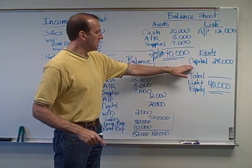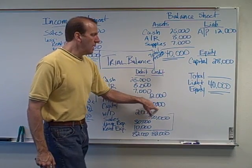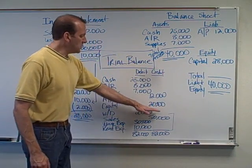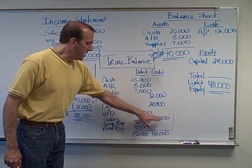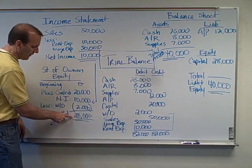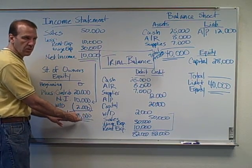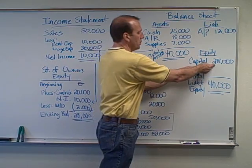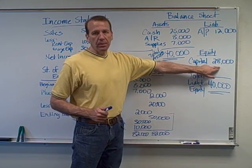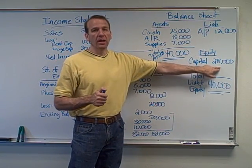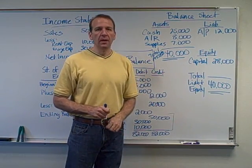Be very careful — the capital account on the trial balance shows $20,000, but that was just the owner contribution. It's actually $28,000 because we also have to take into consideration the withdrawal and the net income from the income statement, just like we calculated over in the statement of owner's equity. We take that $28,000 ending capital balance and plug it into equity on the balance sheet. In later chapters, we'll see how we close out some of these accounts so the ending balance in the capital account will actually be $28,000.